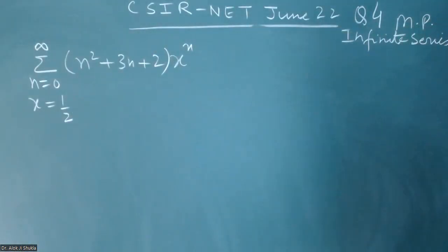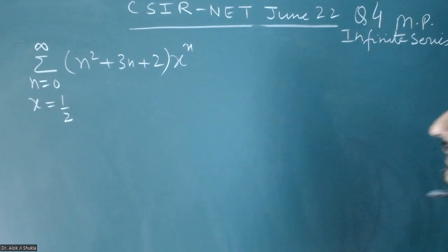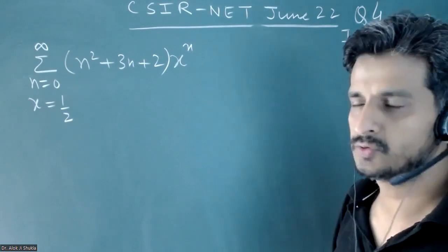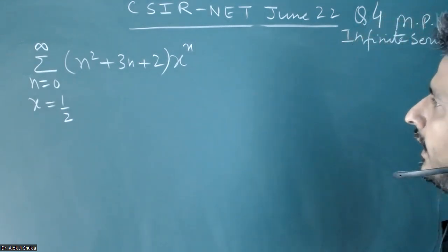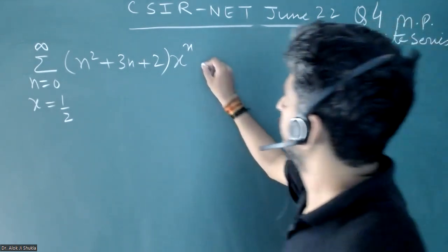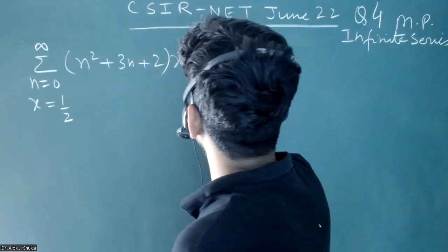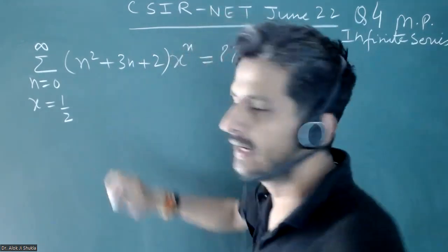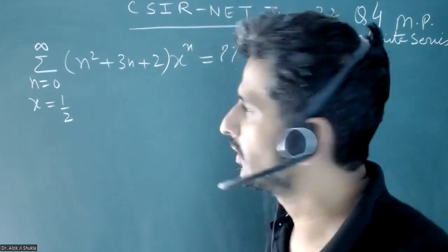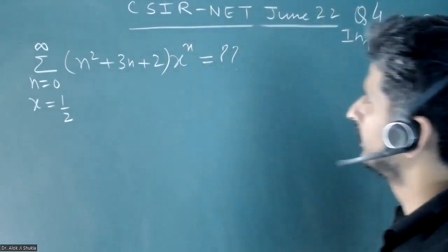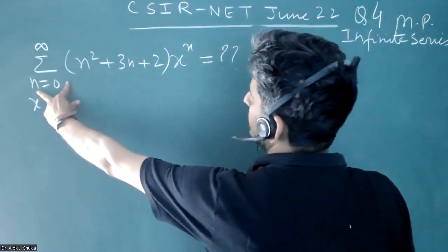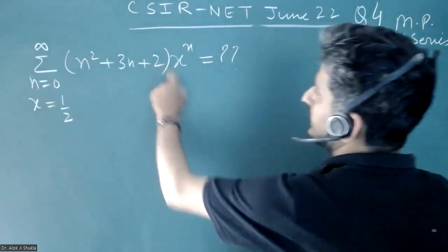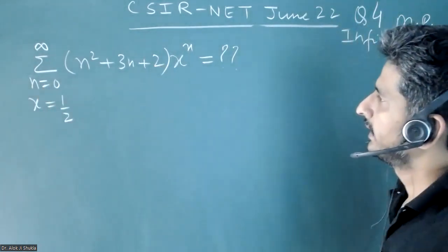This is a question on infinite series from CSIR Net June 2022. The value of this series is to be calculated at x equal to 1/2. Whenever you see a summation like this term, it is just two times summation n equal to zero to infinity.